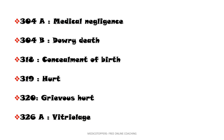Next comes IPC 304A and 304B. A is for apron, meaning medical negligence — doctor. B is for bride, which talks about dowry death. So 304A is medical negligence and 304B is dowry death. This is very important.